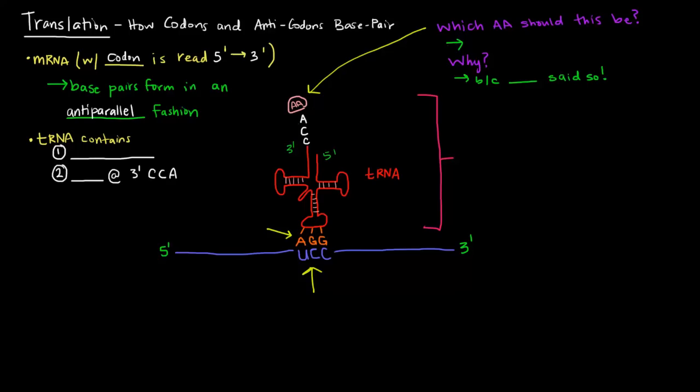The tRNA like I just mentioned contains the anticodon. It also contains an amino acid at its 3' CCA end.